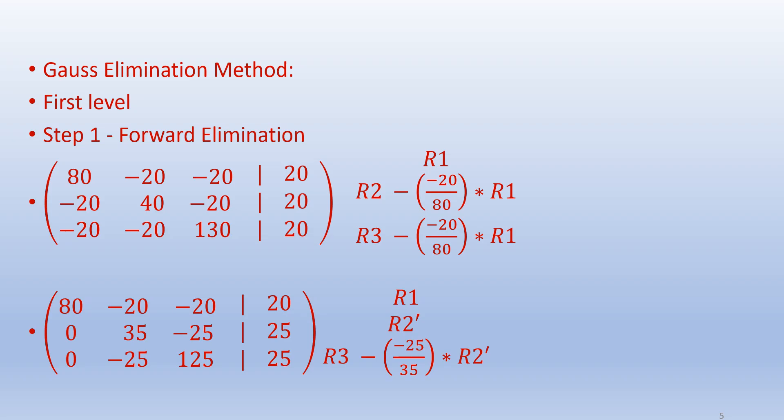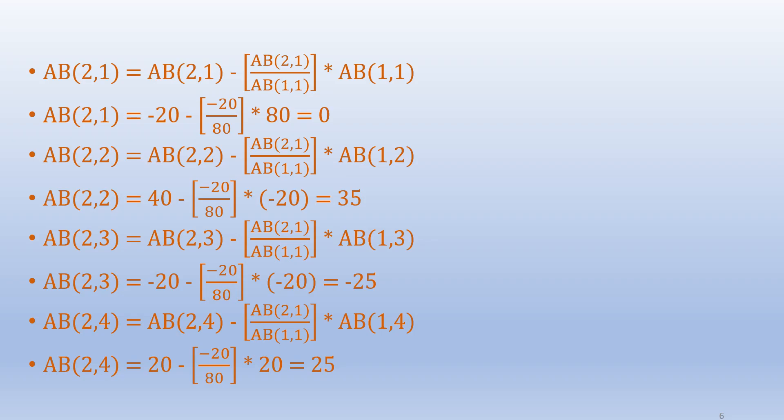The Gauss elimination method consists of two steps: the first is forward elimination and the second is backward substitution. In forward elimination, the idea is to bring all the elements below the main diagonal to zero. In the first level, we are making the elements in the first column below the first row equal to zero, and the steps to achieve this are given here.